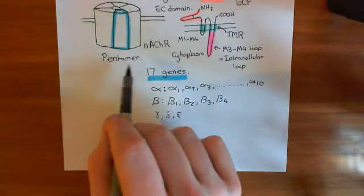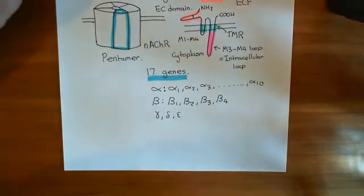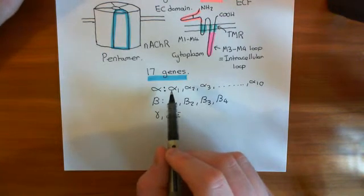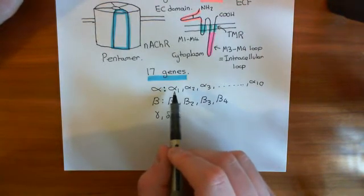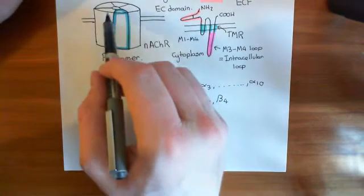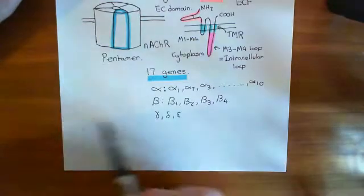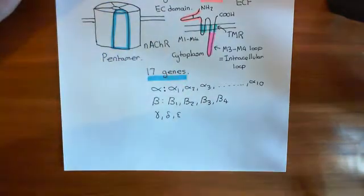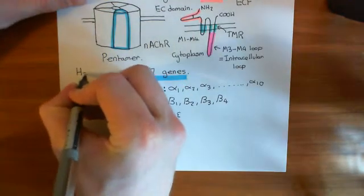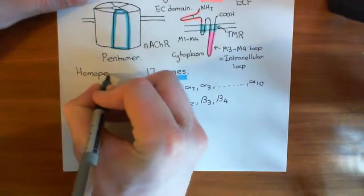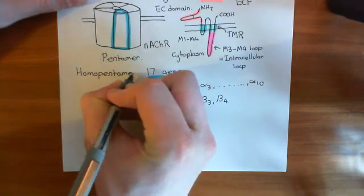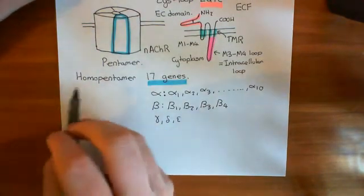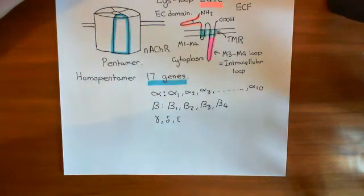The question then arises: how do you pentamerize them? Is it the case that the only way is to make five identical copies of each gene and put them together? For instance, if we took alpha 1, can you only make alpha 1, alpha 1, alpha 1, alpha 1, alpha 1? That concept is known as a homopentamer. If you use the same subunit type in all five slots of the nicotinic acetylcholine receptor, then that's called a homopentameric nicotinic acetylcholine receptor.